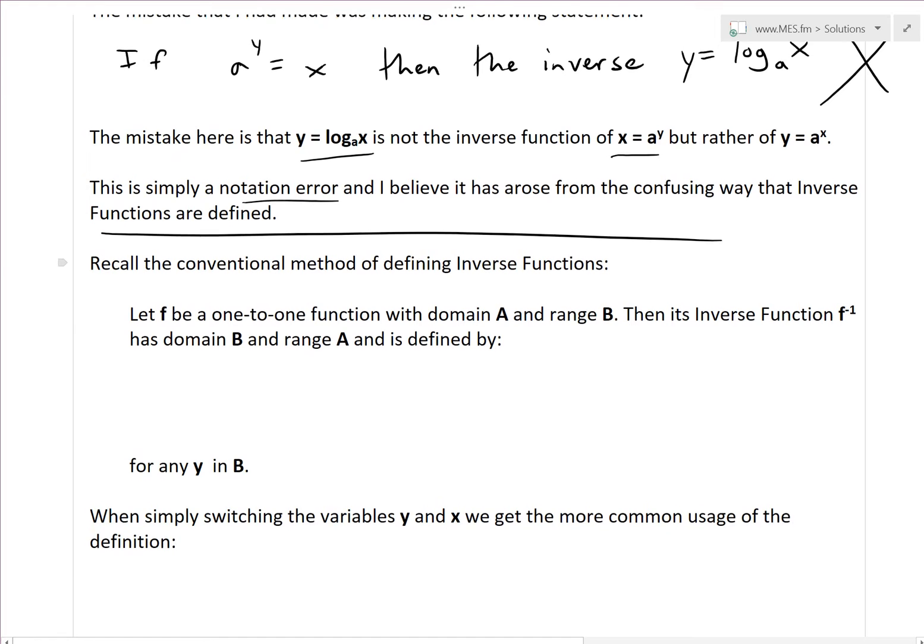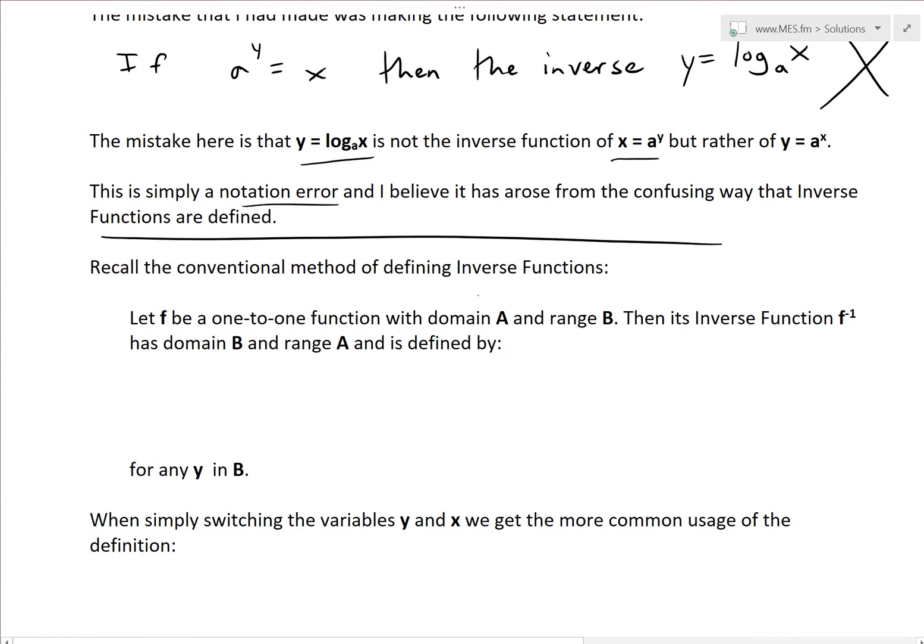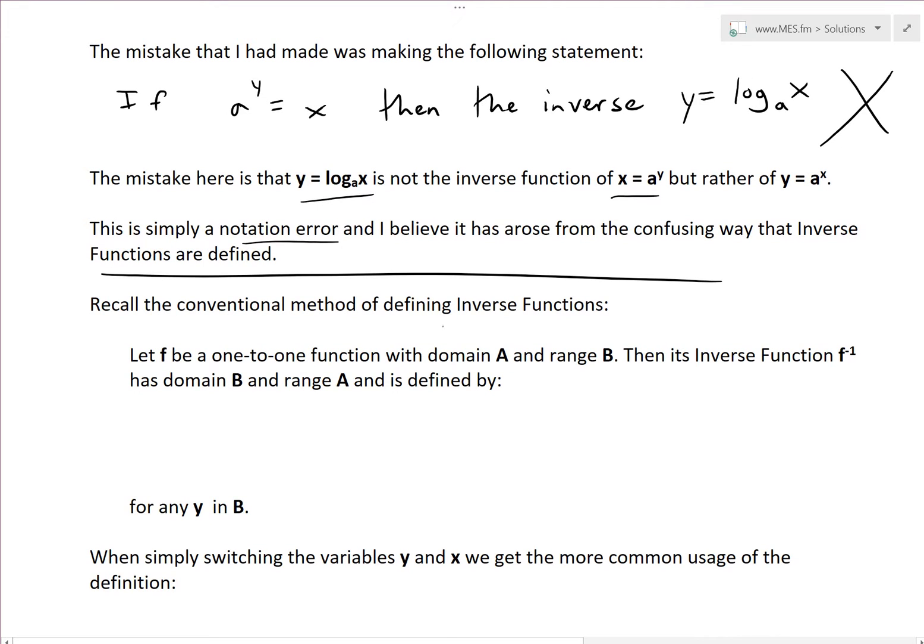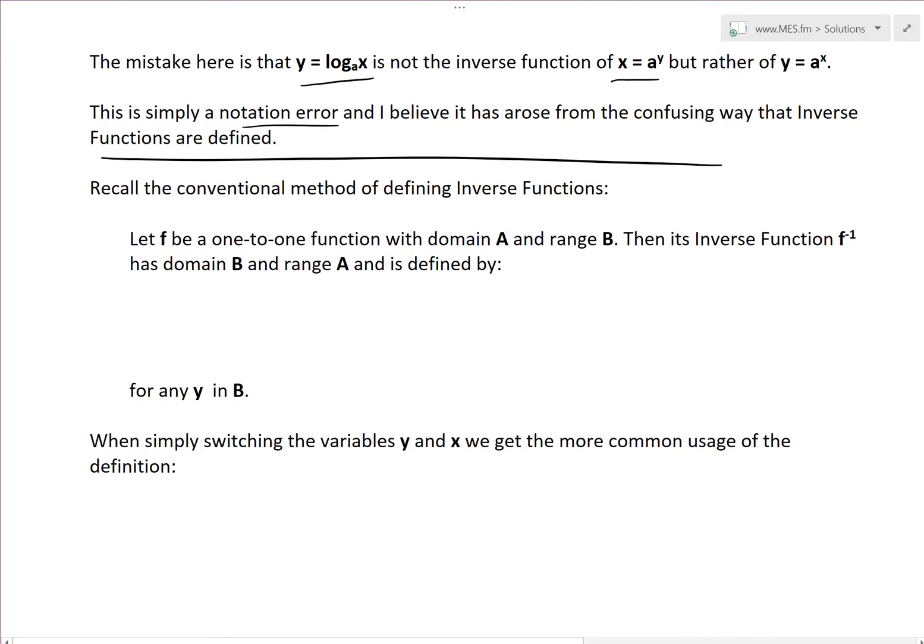So now let's understand why this error came about. Let's recall the conventional method of defining inverse functions. Let function f be a one-to-one function. One-to-one just means for every y, there is one x value only,